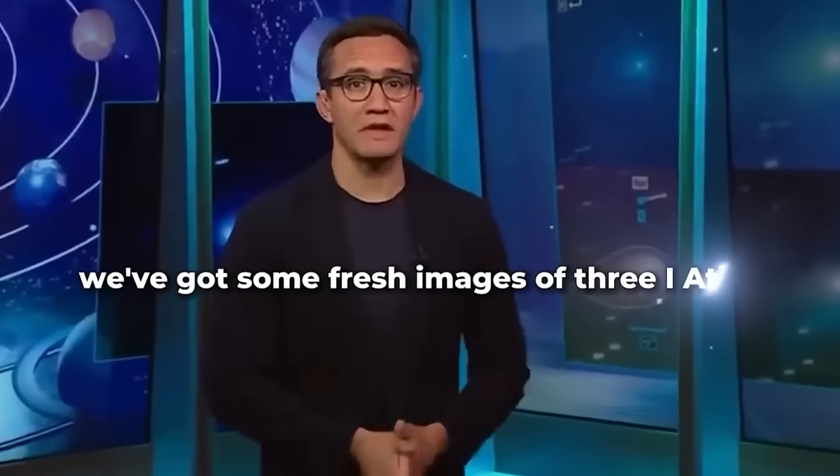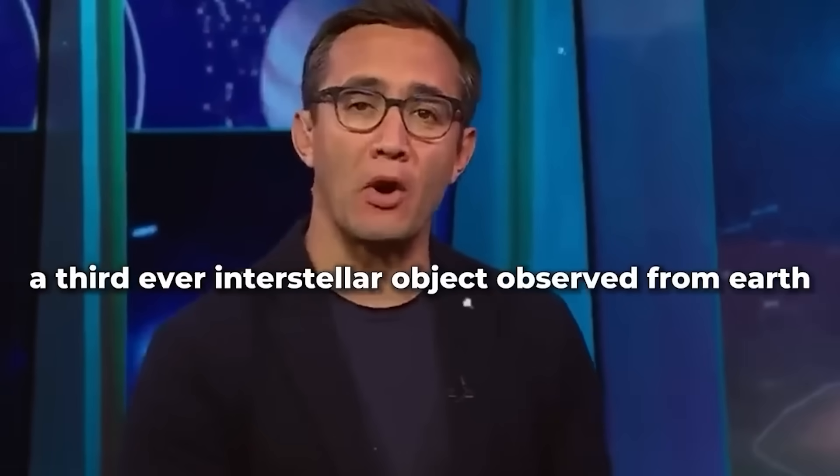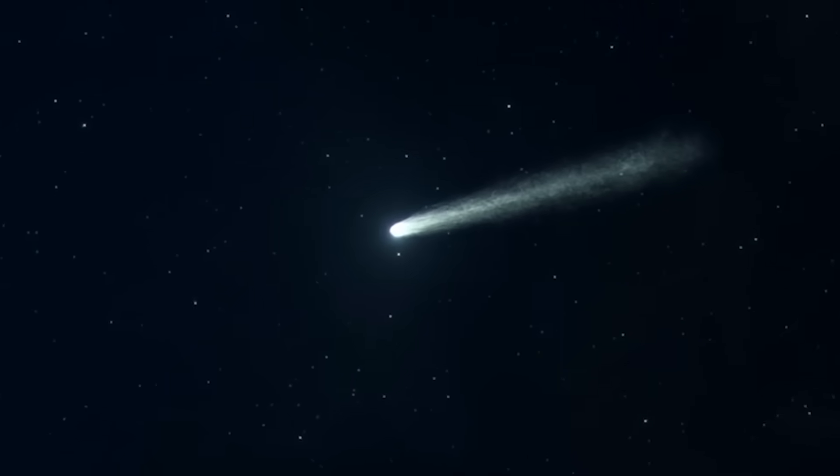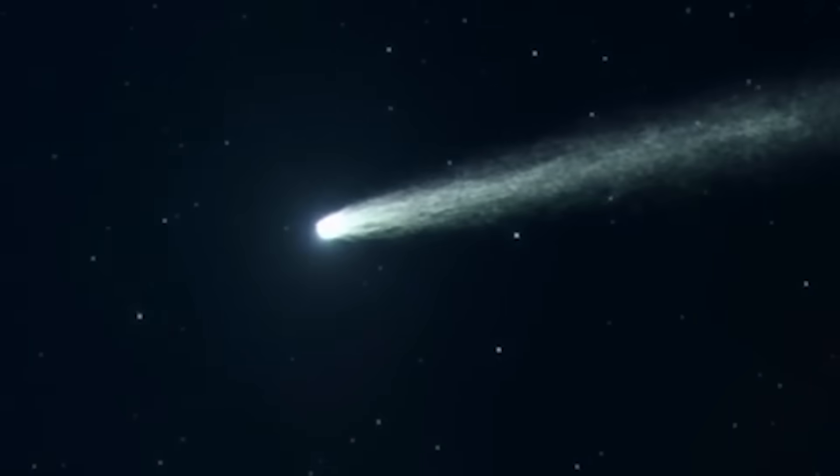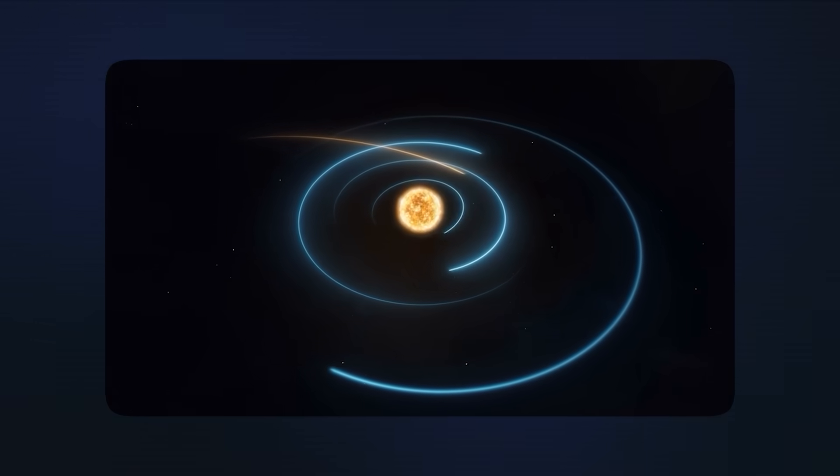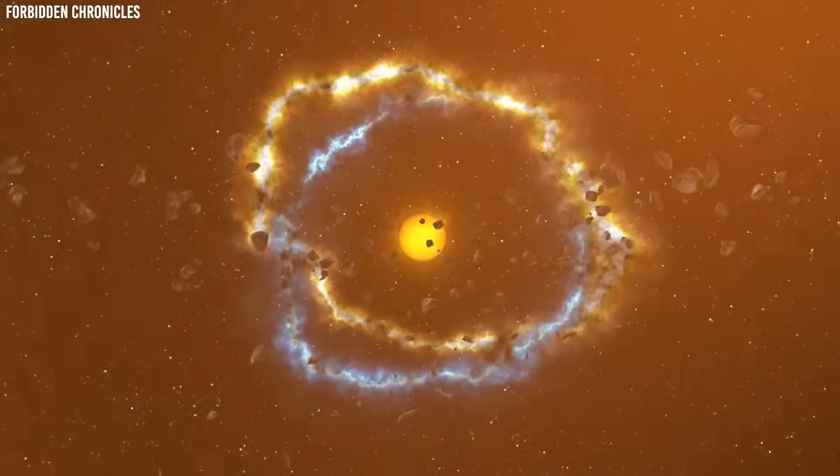We've got some fresh images of 3I Atlas, a third-ever interstellar object observed from Earth, currently racing through our solar system. Right now there's a comet blazing across our sky that's got astronomers completely stumped. C2025 R2 SWAN just survived a scorching close encounter with the sun and is heading straight toward us.